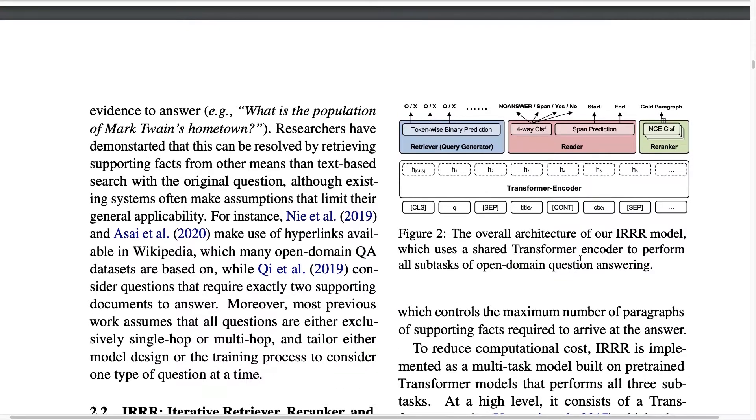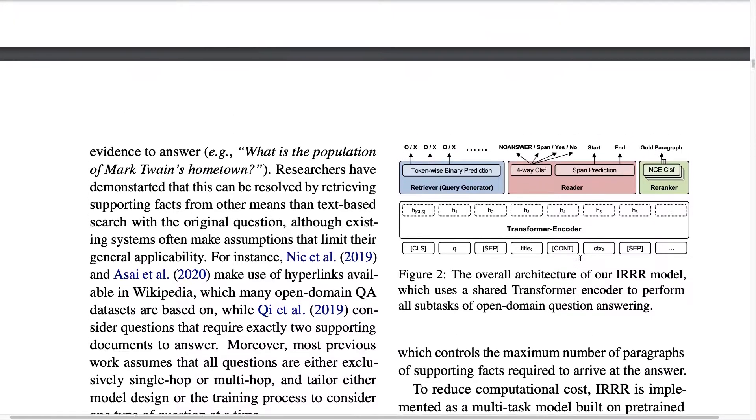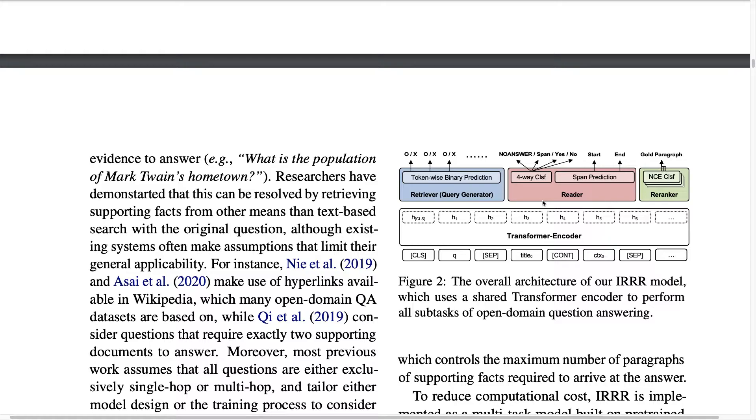So the way this IRRR model works is actually a multitask model so you have a shared transformer encoder used by all components, the retriever, the reader and the reranker models. As the model they use an ELECTRA model which is similar to BERT but a more efficient version.